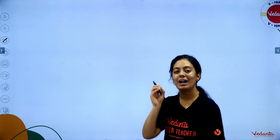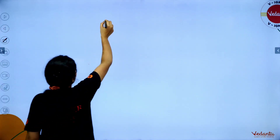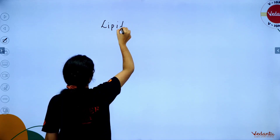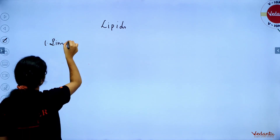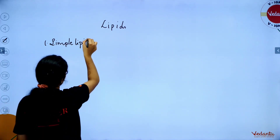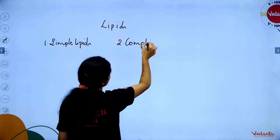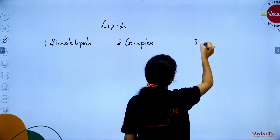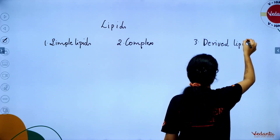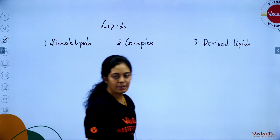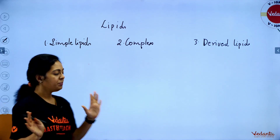So fatty acids are long chain hydrocarbons with a carboxylic group. Lipids are basically of three types: the classification is simple lipids, complex or conjugated lipids, and derived lipids.